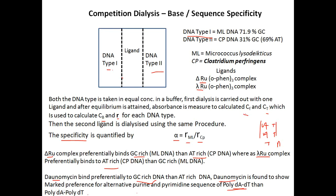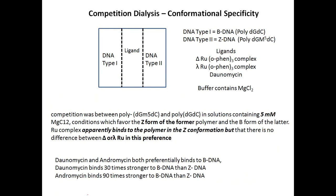Competition dialysis is also used for conformational specificity. DNA type 1 is B-DNA, and type 2 is Z-DNA — such as poly dG-dC, while the Z-type uses poly dG-m5dC where there is methylation at the 5-position. Ruthenium complexes (delta and lambda) are analyzed under conditions containing MgCl2 buffer which favors the Z-form. The result shows that the ruthenium complex apparently binds to the polymer in Z-conformation.